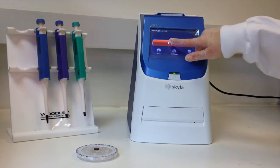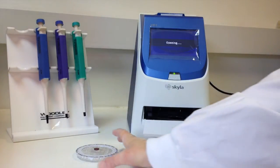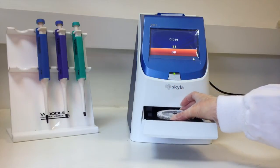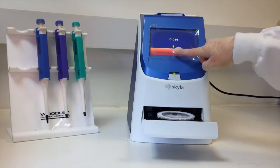Press the start icon on the touchscreen to open the rotor drawer at the front of the analyzer. Hold the rotor by its edge with the barcode facing up and the rotor kept level. Avoid touching the surface of the rotor and gently place the rotor into the drawer. Press OK to close the rotor drawer.